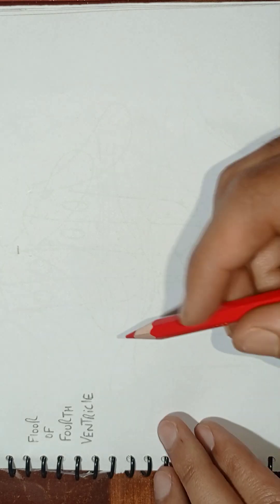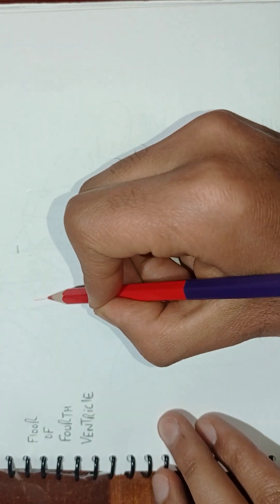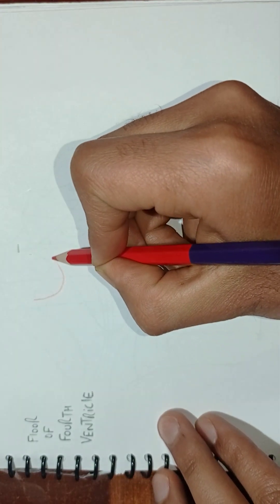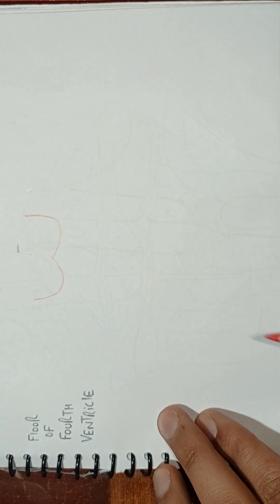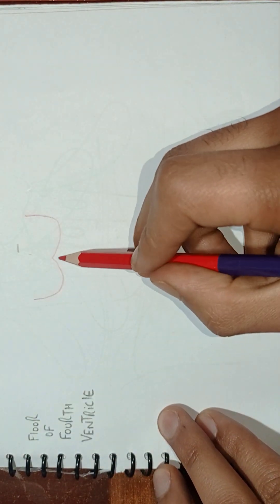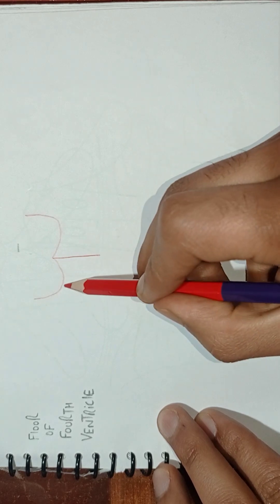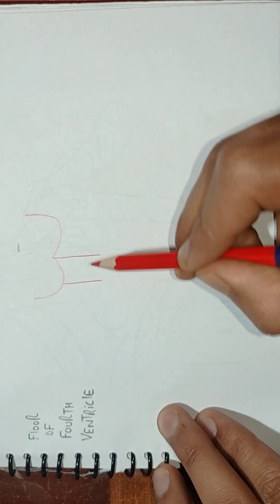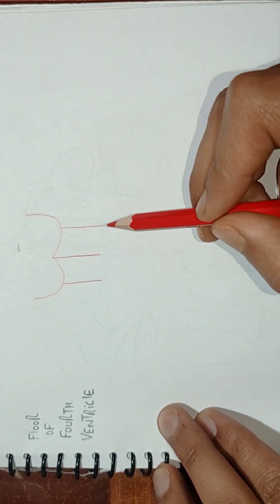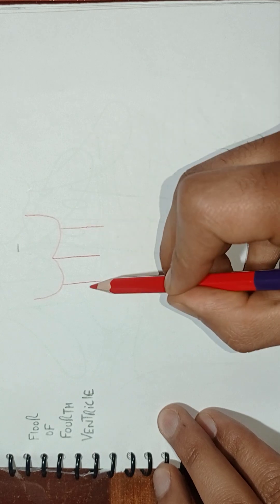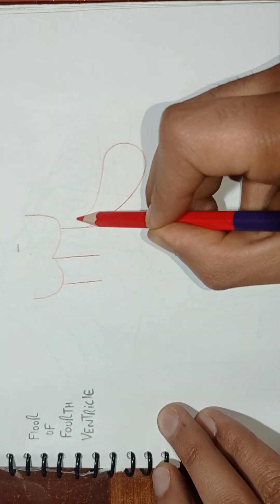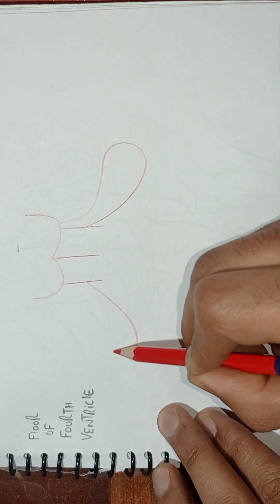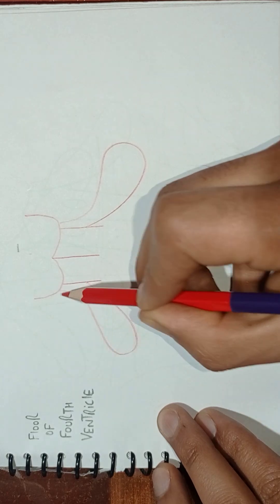How to draw the floor of the fourth ventricle. First, we will draw a structure called the inferior colliculus, like this. This is the inferior colliculus. From this, we will draw three lines — number first, number second, and number third. From these two points, we will draw a structure like this, and another similar structure like this.